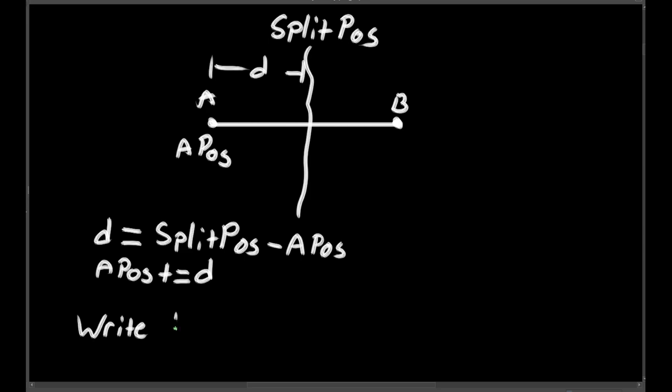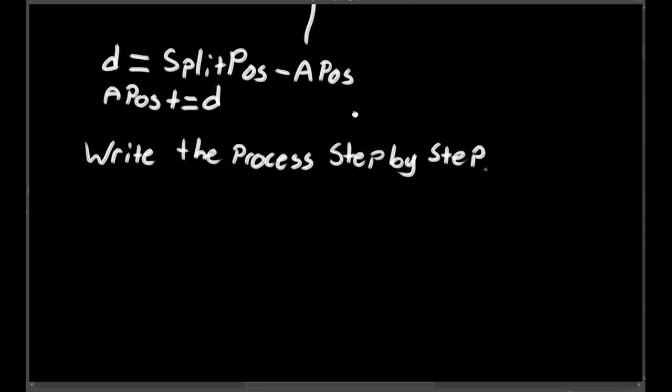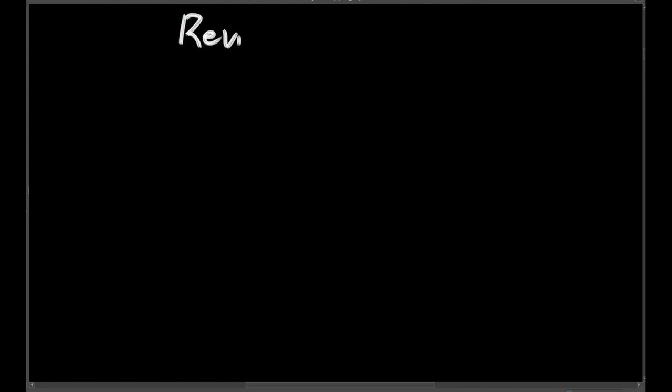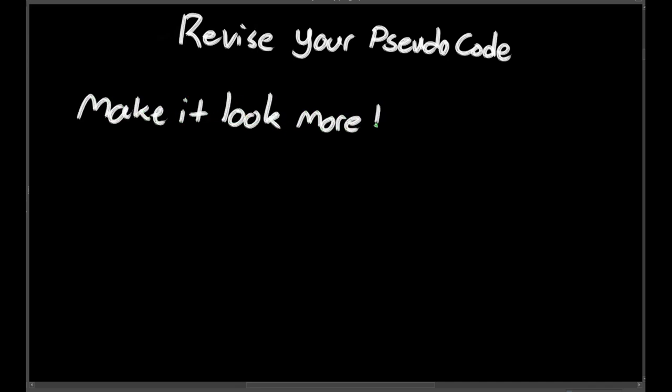If your pseudocode is more complicated than just the few lines that we have, then you should probably go through and revise it. This is where you can add things like loops and make it look more like actual code. If you do change your pseudocode around, I recommend walking through it with your example to make sure you didn't make any changes that don't work.